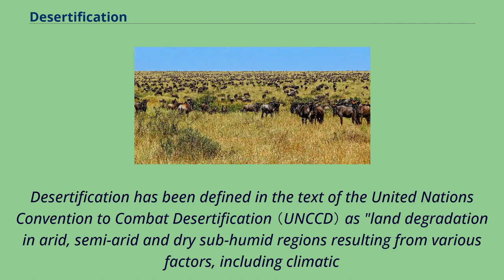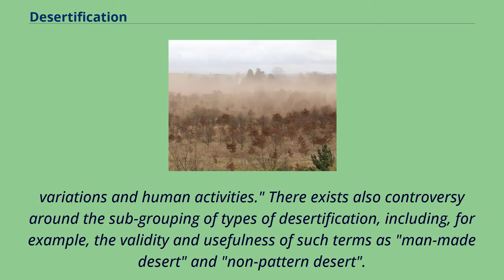Desertification has been defined in the text of the United Nations Convention to Combat Desertification as land degradation in arid, semi-arid and dry sub-humid regions resulting from various factors, including climatic variations and human activities. There exists also controversy around the subgrouping of types of desertification, including the validity and usefulness of such terms as man-made desert and non-pattern desert.